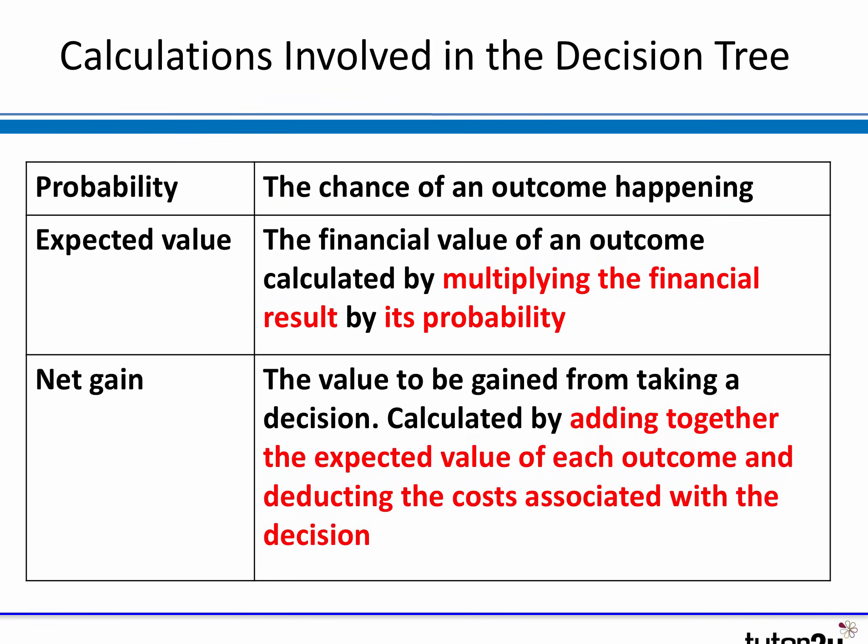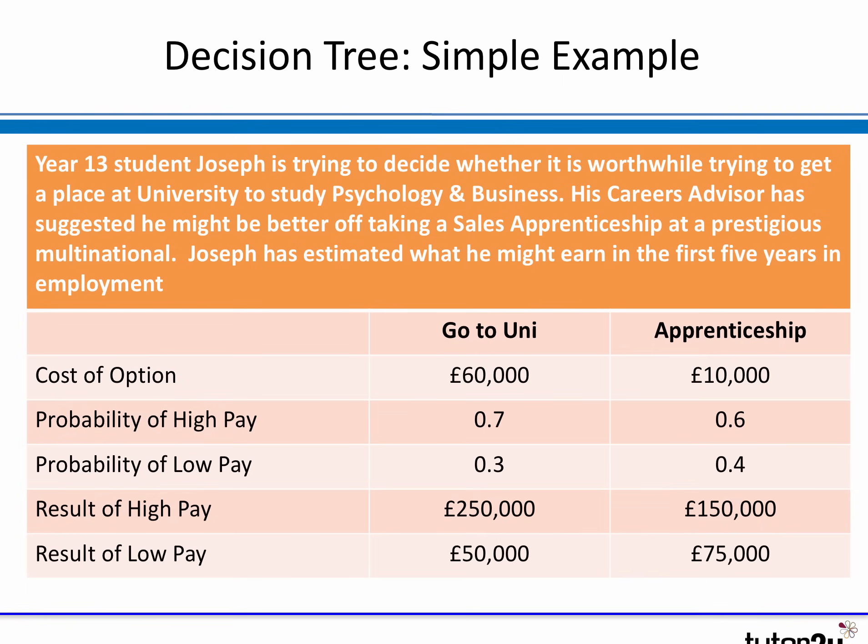So onto the calculations. The expected value of an outcome is simply the financial result multiplied by the probability. Then the net gain is calculated by adding up all the expected values of each outcome and taking away the cost, to work out the net gain. Let's have a look at how we do this to see what kind of numbers come out.